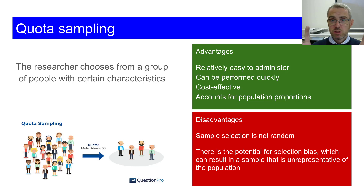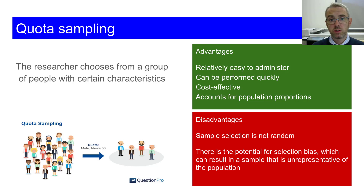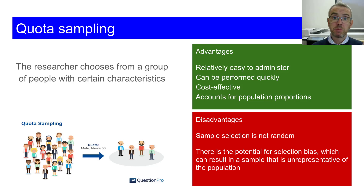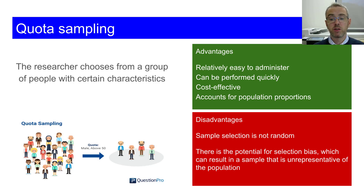The third one is quota sampling. You basically choose from a group of people with certain characteristics. For instance, if you're selling over-50s life insurance, you're not going to ask 25-year-olds — you're going to ask over-50s males, pick them out, and then go and ask them the questions. It's relatively easy to administer, can be performed pretty quickly, is cost effective, and accounts for population proportions. However, it's not random, so that can be a disadvantage — there's a potential for selection bias which can result in it being unrepresentative of the population.